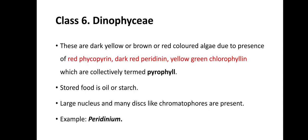Class 6 is Dinophyceae. These are dark yellow, brown, or red-colored algae due to the presence of red phycopyrrin, dark red peridinin, and yellow-green chlorophyllin, which are collectively termed as pyrophyll. Stored food is oil or starch. A large nucleus and many disc-like chromatophores are present. For example, Peridinium.